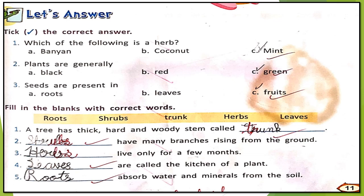Number two: plants are generally which color? Option A: black, option B: red, option C: green. Yes, it is option C, green. Number three: seeds are present in — option A: roots, option B: leaves, option C: fruits. Seeds are present in fruits — some fruits have one seed, some have many. So the answer is option C.